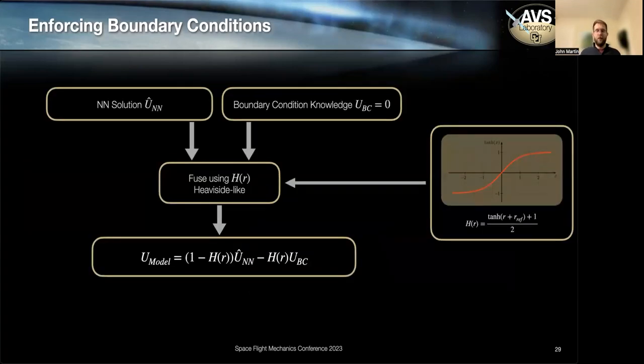So the answer is yes, we can use things like heavy side functions or smoother flavors like hyperbolic tangents to do exactly that to turn the knob down on the neural network and turn the knob up with the boundary condition through this equation.